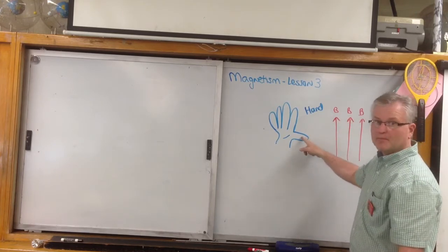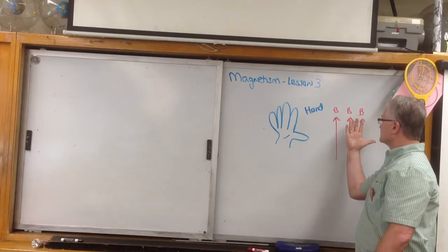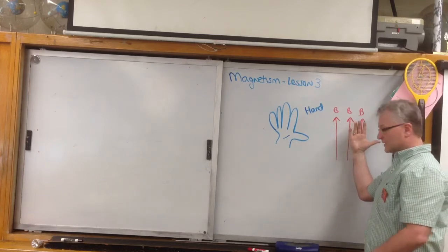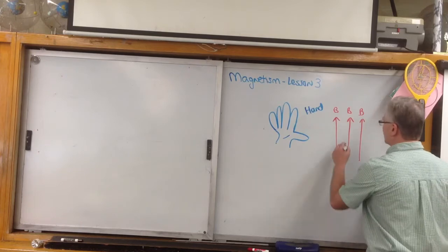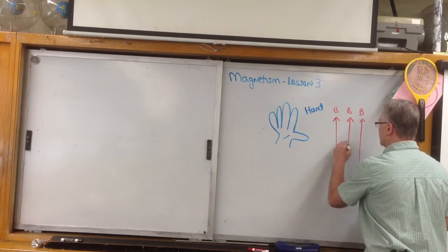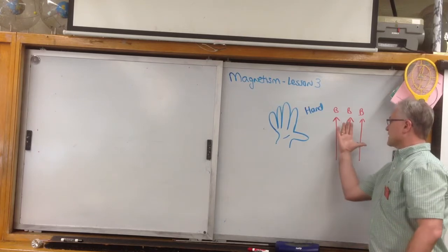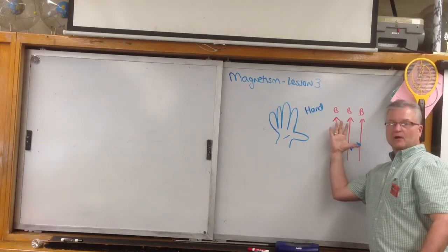This is my thumb. My thumb sticks out to the side like so. This is the direction of the velocity of the particle. So for example, if the particle is moving to the right here, my thumb had better be moving in the direction of the velocity in that way.